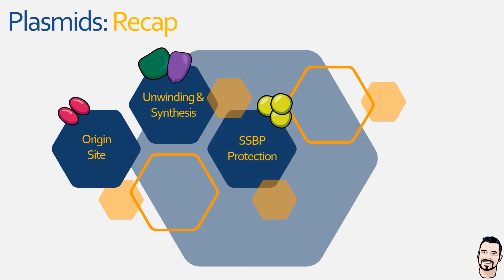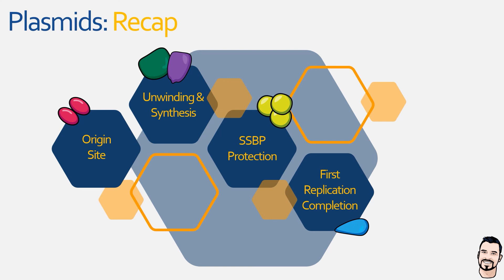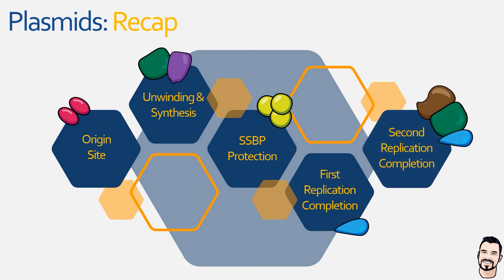The displaced single-stranded DNA is covered with single-strand binding proteins to help protect it. The first plasmid is then finalized using DNA ligase, which seals the nicked sugar-phosphate backbone. Finally, RNA primase creates a primer on the single-stranded DNA, which DNA polymerase III uses to produce another complementary strand, also finalized with DNA ligase. The result is two plasmids, each containing a single parental strand and a newly synthesized daughter strand.